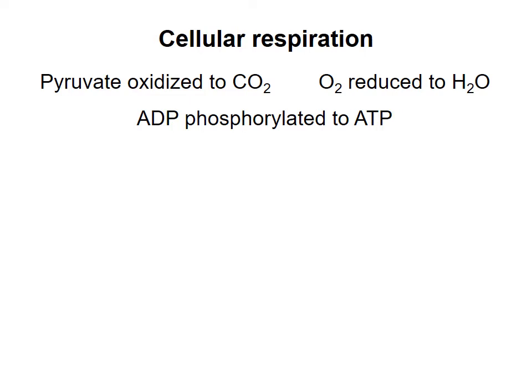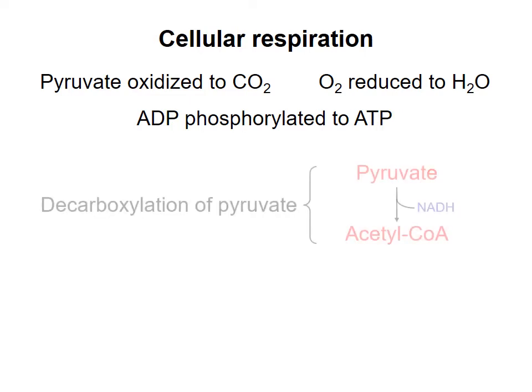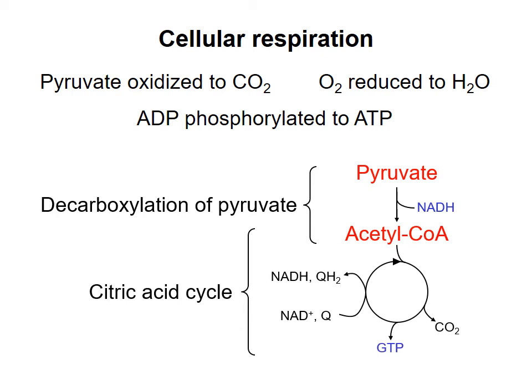The oxidation of pyruvate occurs in two steps. The first is a conversion of the three carbons of pyruvate into acetyl-CoA and CO2, and then the acetyl-CoA goes on to further oxidation in the citric acid cycle. Some of the products of this are reduced electron carriers, NADH and QH2. The rest of this video I'm going to talk about decarboxylation of pyruvate.